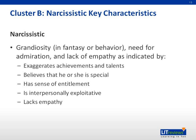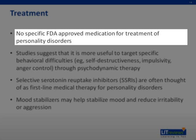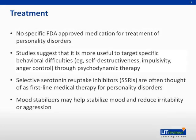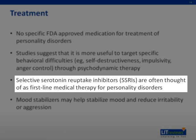Now let's talk about treatment. There are no specific medications approved by the Food and Drug Administration of the US for the treatment of personality disorders. However, patients who present with personality difficulties not infrequently have other psychiatric disorders, including depression and substance abuse, that should be addressed with appropriate pharmacological treatment. Some studies suggest it is more useful to target specific behavioral difficulties — for example, self-destructiveness, impulsivity, and anger control — through psychodynamic therapy. SSRIs are often thought of as a first-line medical therapy for some personality disorders. Mood stabilizers may help stabilize the mood and reduce irritability or aggression.